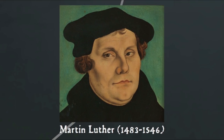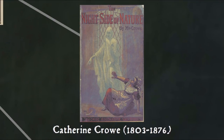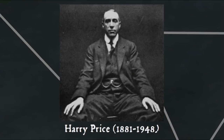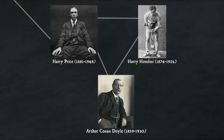Poltergeist was first used in print by Martin Luther, the instigator of the Protestant Reformation, but it didn't make it into English until Catherine Crowe used it in her 1848 collection of ghost stories, The Night Side of Nature, referring specifically to the poltergeists of the Germans. Crowe herself later had a run-in with the spiritual realm when one night in February 1854 she was found naked in Edinburgh, convinced that spirits had turned her invisible. The word poltergeist only became popular in the 20th century when used by psychic investigator and debunker Harry Price, a friend of fellow debunker and magician Harry Houdini, who was a target for the ire of noted spiritualist and writer Sir Arthur Conan Doyle, inventor of Sherlock Holmes. Conan Doyle at one point threatened Price that if he didn't give up his attacks on spiritualism he would meet the same fate as Houdini.